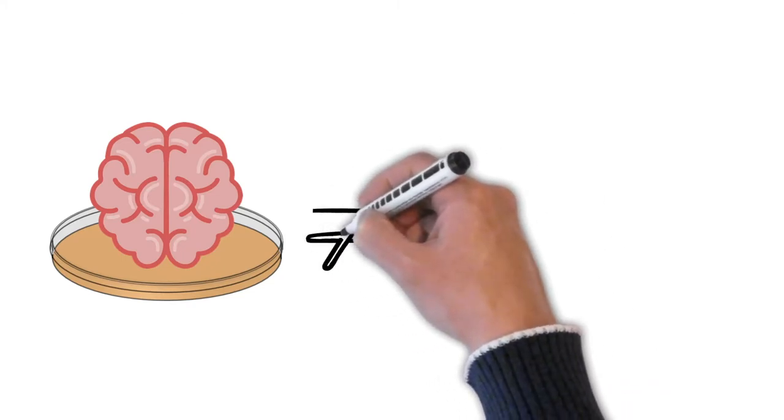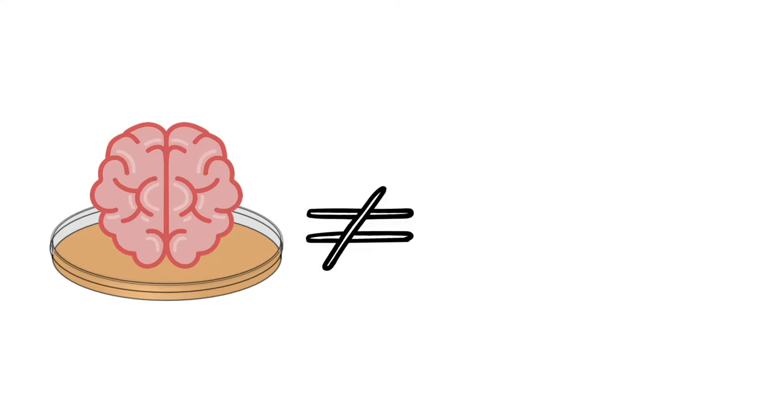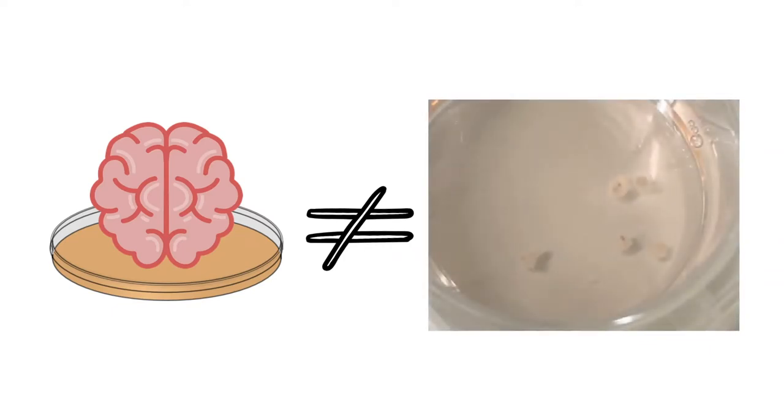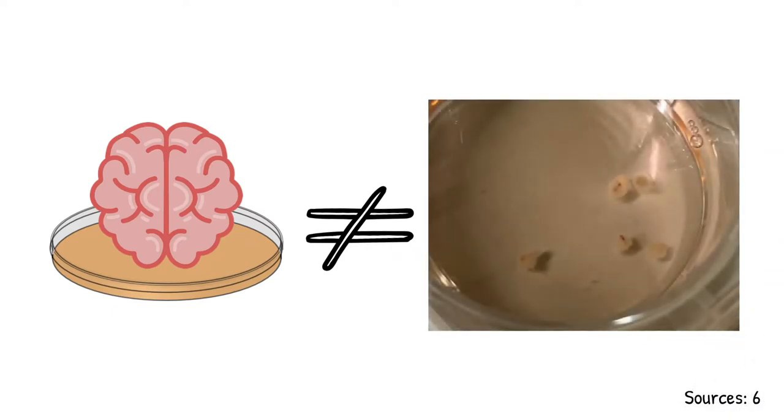So, for example, brain organoids are not able to develop into full brains in petri dishes, but they can grow roughly to the size of a pea, about 4 millimeters in diameter. You can see some here.